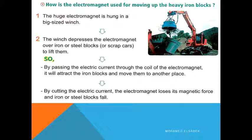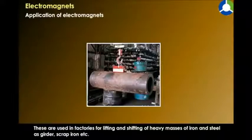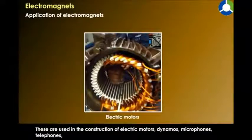Today we will continue our science lesson on magnetism and electricity, and we will learn about the uses and applications of electromagnets. These are used in factories for lifting and shifting heavy masses of iron and steel, such as girders and scrap iron. They are also used in the construction of electric motors, dynamos, microphones, telephones, and electric bells.